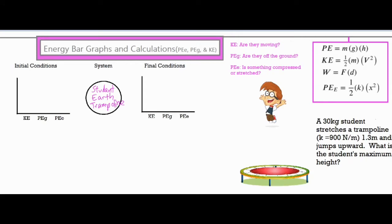Those are the things I'm placing in my system that are most relevant. You may be asking why the earth is involved — the earth provides the gravitational field and gives the person gravitational potential energy, so it's typically included in your system. Considering that's my system, I want to ask a series of questions to fill out my bar graphs: for kinetic energy, are they moving and if so how fast? For gravity, are they off the ground and if so how much? For elastic potential energy, is something compressed or stretched and if so how much? We'll put bars on our initial and final conditions to see what types of energy we have before using the formulas in this box.